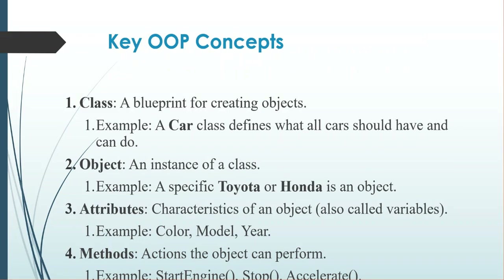In object-oriented programming, we have key concepts. First, a class is a blueprint for creating objects. For example, a car class defines what all cars should have and can do. An object is another concept — it is an instance of a class. For example, a specific Corolla, Toyota, or Honda is an object.